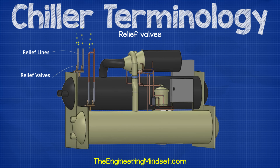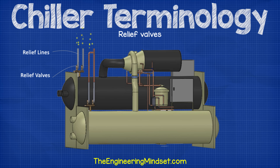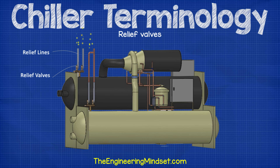Relief valves. Relief valves and lines are fitted to chillers to protect the components and operators from a dangerous amount of pressure buildup within the chiller from the refrigerant. It is rare that this scenario occurs, but it is possible — for instance, in the case of a fire. Typically, the chiller will use a spring-loaded valve which opens automatically if the refrigerant pressure is more than the spring pressure. This will allow the refrigerant to safely vent to atmosphere, and the valve will close again once it reaches a lower pressure.